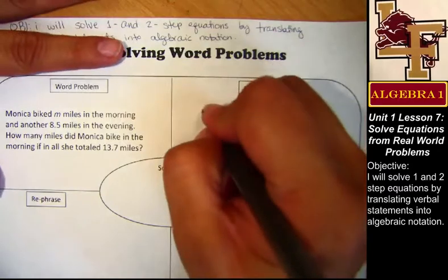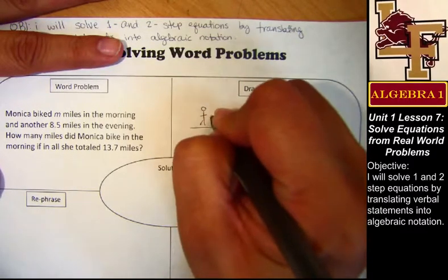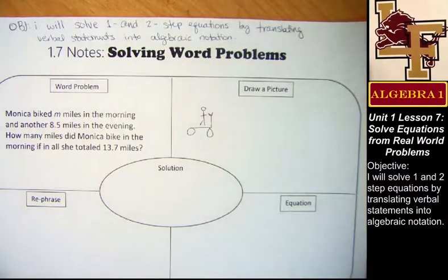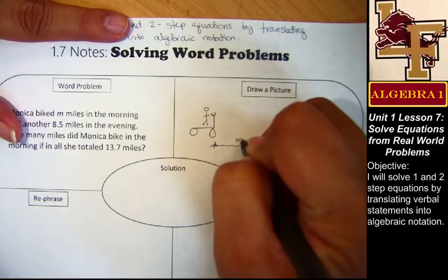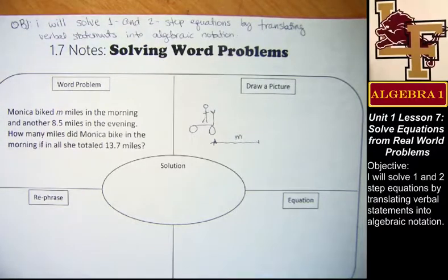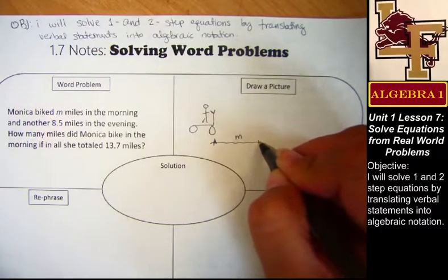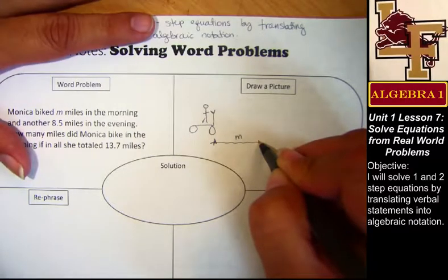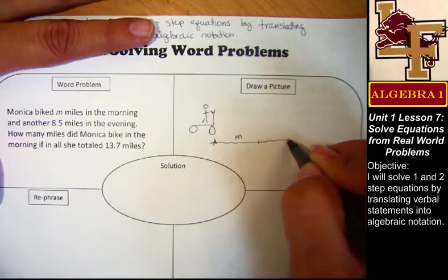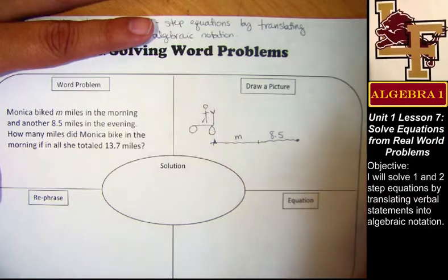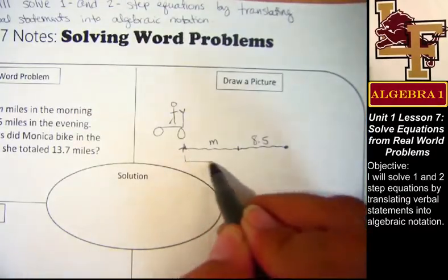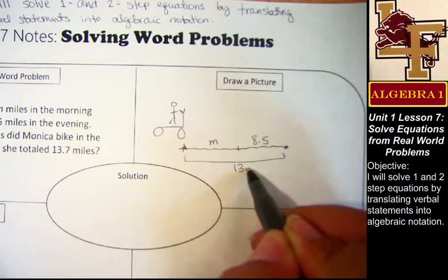So let's show Monica on her bike. That is the best bike I've ever drawn. It looks like a scooter. We're just going to pretend it's a bicycle. So there's her bicycle. She starts off in the morning and she rides some distance. We're using m to represent the morning. And then after she has lunch and she hangs out with her friends or she's at work or whatever, she's getting ready to go home and she bikes 8.5 miles. And then she gets to where she's stopping. There's our picture.